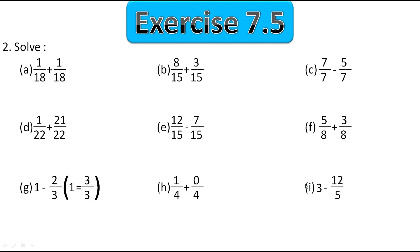Now let's move to the second question where we have to solve these fractions. In the first one we keep the denominator 18 as it is, and since there is a plus sign we add the numerators: 1 plus 1 gives 2 upon 18. But writing this much is not enough — we have to keep the answer in simplest form. Looking at 2 upon 18, both 2 and 18 are multiples of 2, so we divide by 2. 2 upon 2 is 1 and 18 upon 2 is 9. So the simplest form of 2 upon 18 is 1 upon 9.